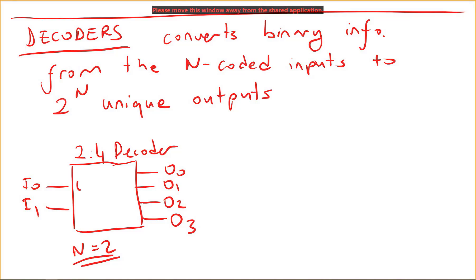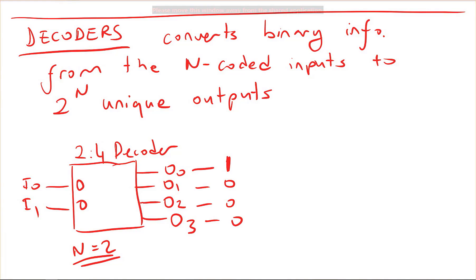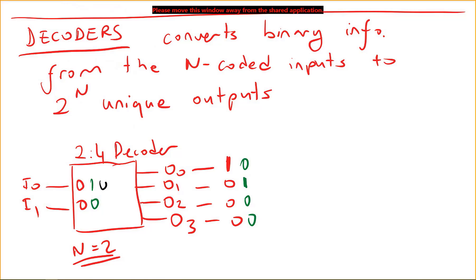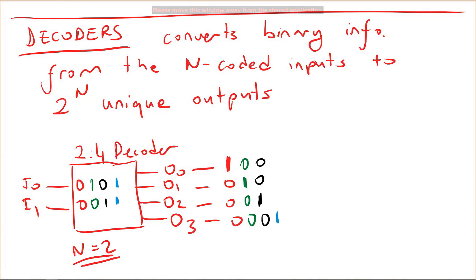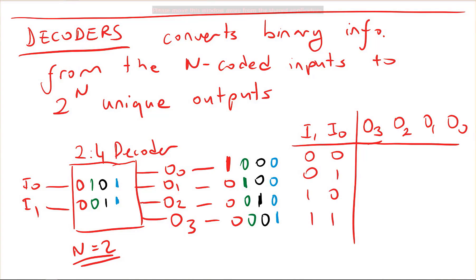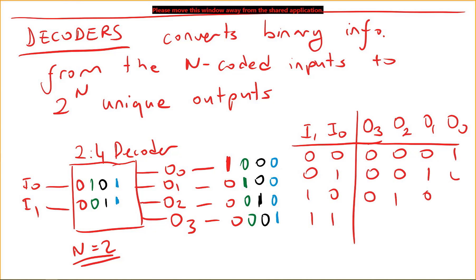If i0 and i1 are both zero, output zero is one and the others are zero. If i0 is one and i1 is zero, we select output one and the rest are zero. If i0 is zero and i1 is one, output two is one and the others are zero. If both are one, output three is one and the others are zero. This is the functionality table.